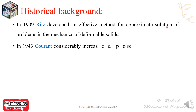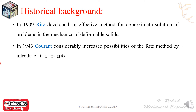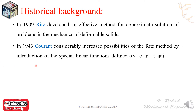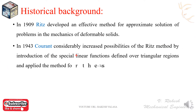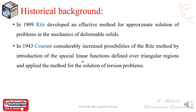In 1943, Courant considerably increased the possibilities of the Ritz method by introducing special linear functions defined over triangular regions and applied the method for the solution of torsional problems. As unknowns, the values of functions at the node points of triangular regions were chosen.